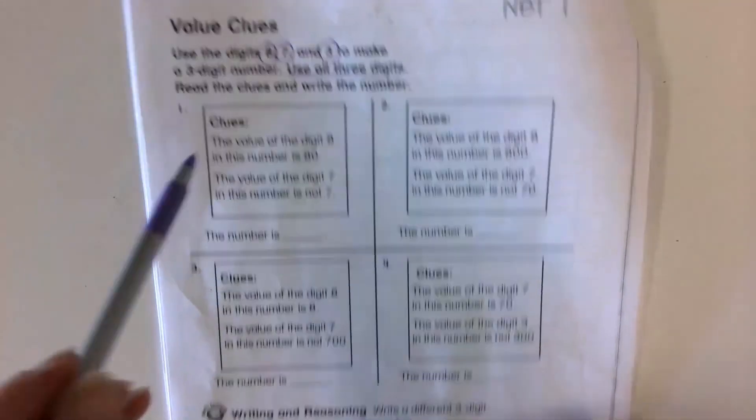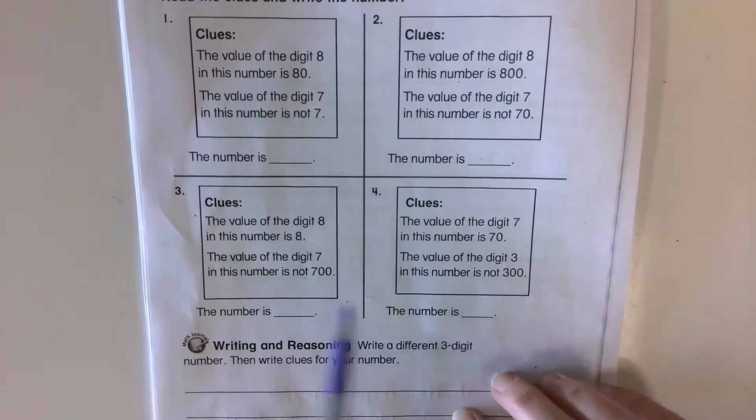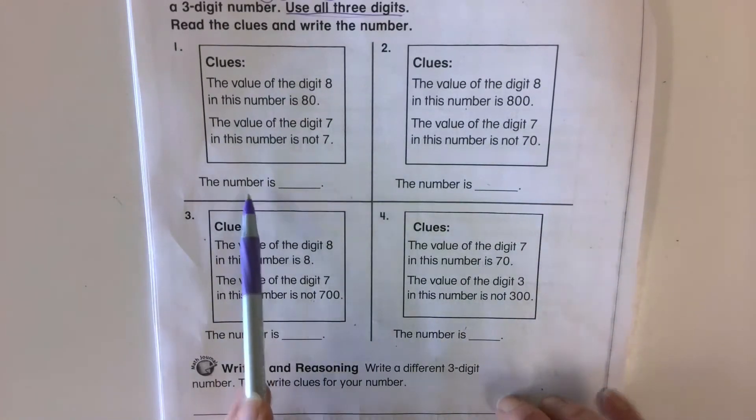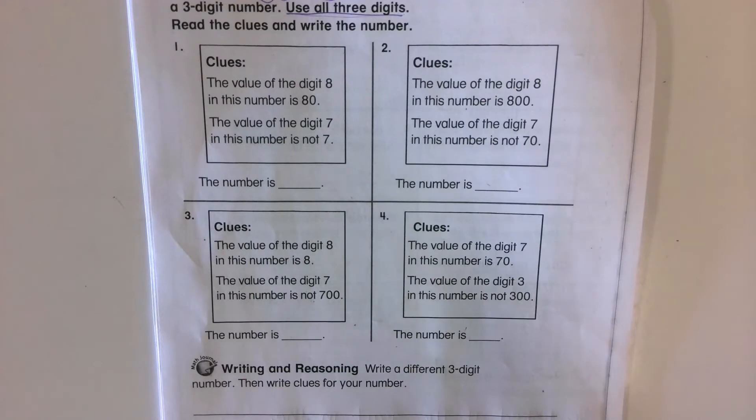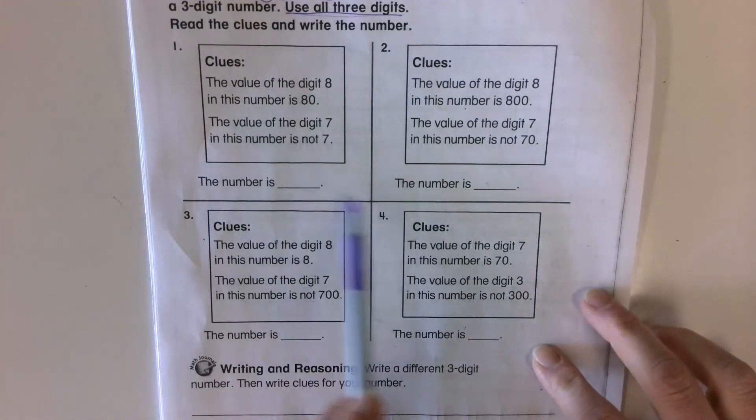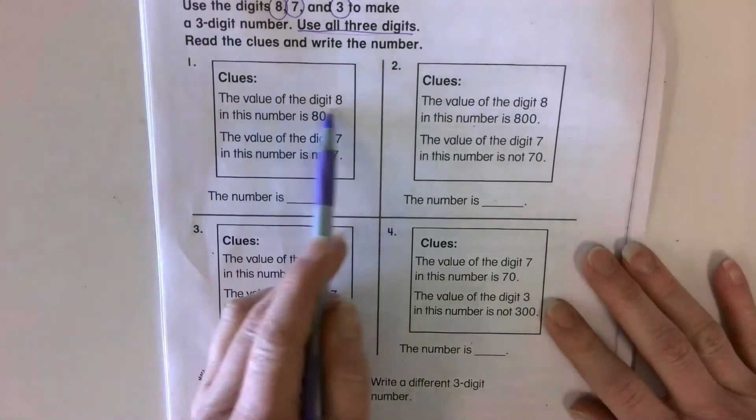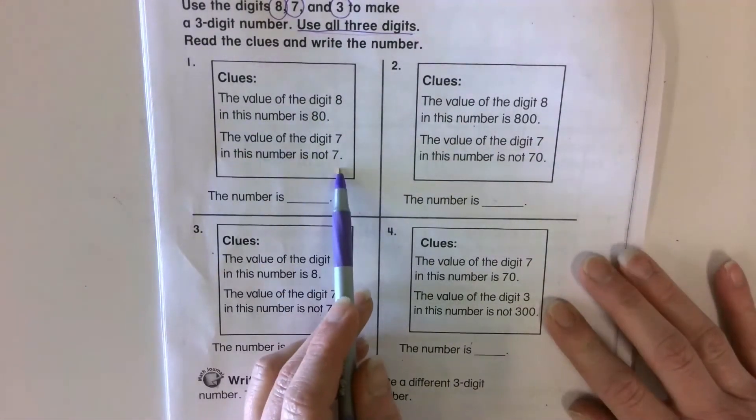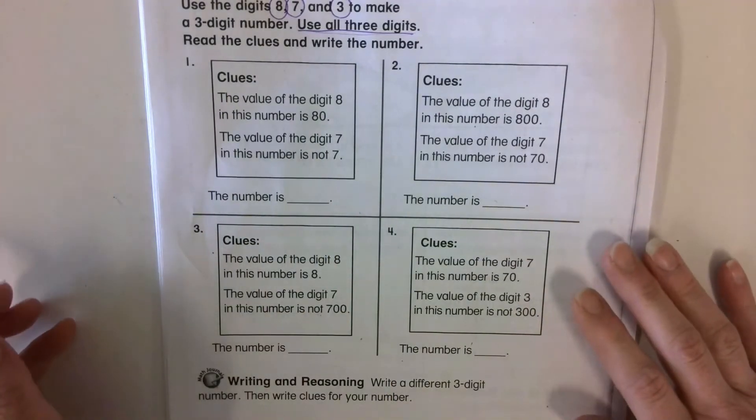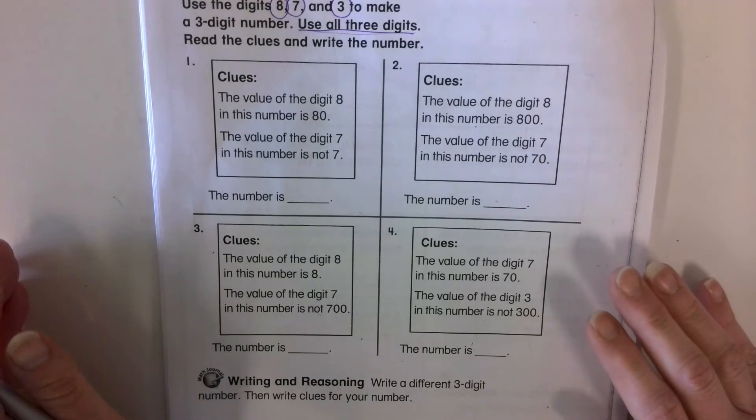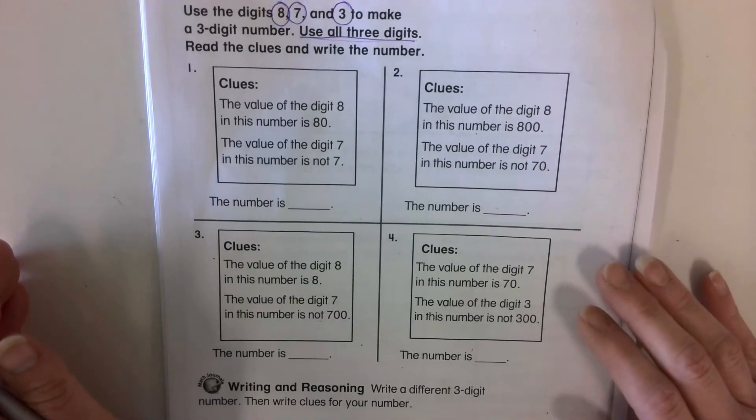So for all of these clues, every answer is going to have an eight in it, a seven in it, and a three in it. You have to use all three of these digits for each one of these. But you have to read these clues so you know what order to put those digits in. So you know what goes in the ones place, what goes in the tens place, and what goes in the hundreds place.